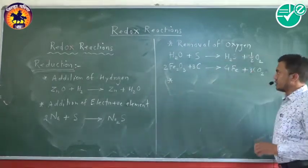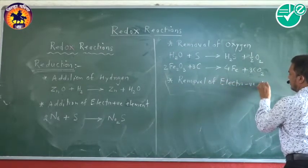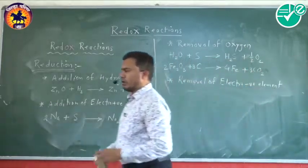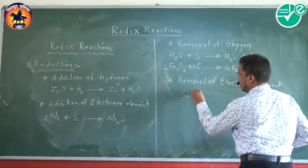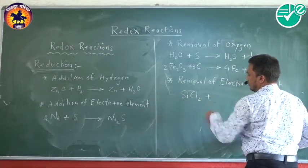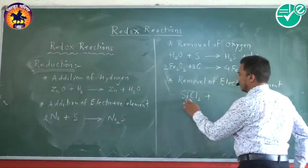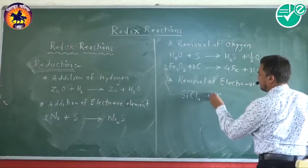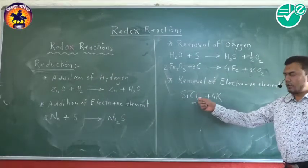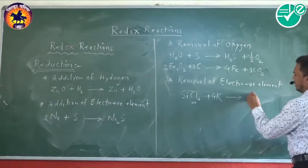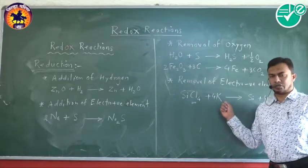Another classical definition is removal of an electronegative element from the species. For example, silicon tetrachloride treated with potassium: chlorine is electronegative and gets removed from silicon tetrachloride by potassium. It converts to Si plus 4 potassium chloride. This is also called reduction.